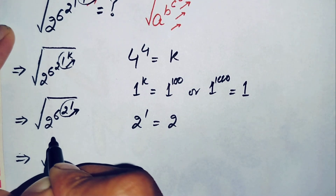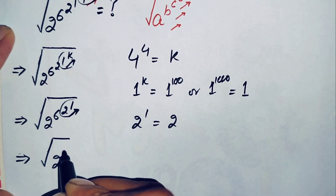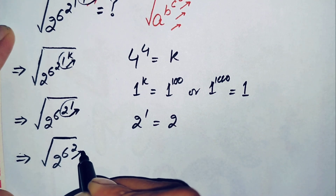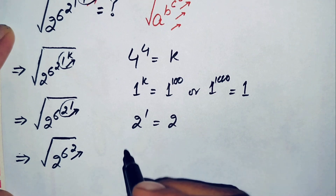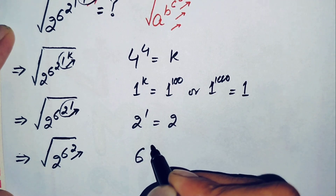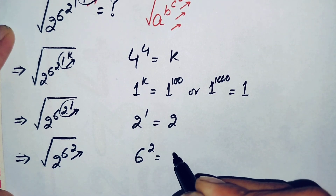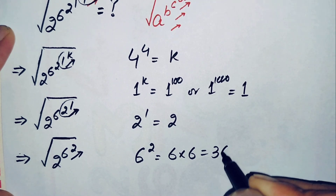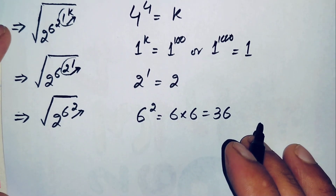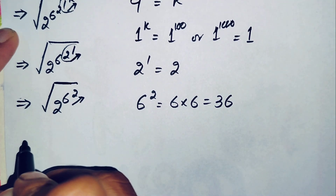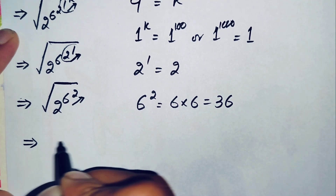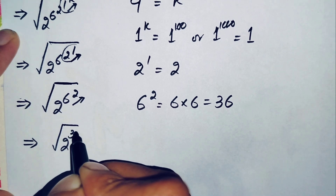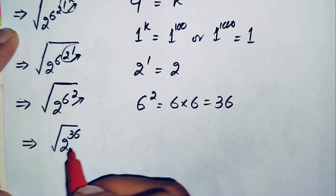Replacing 1 raised to power K with 1 and 2 raised to power 1 with 2, the expression becomes the square root of 2 raised to power 6, raised to power 2. Now we find 6 raised to power 2, which is 6 times 6, equal to 36. Replacing this, the expression becomes the square root of 2 raised to power 36.